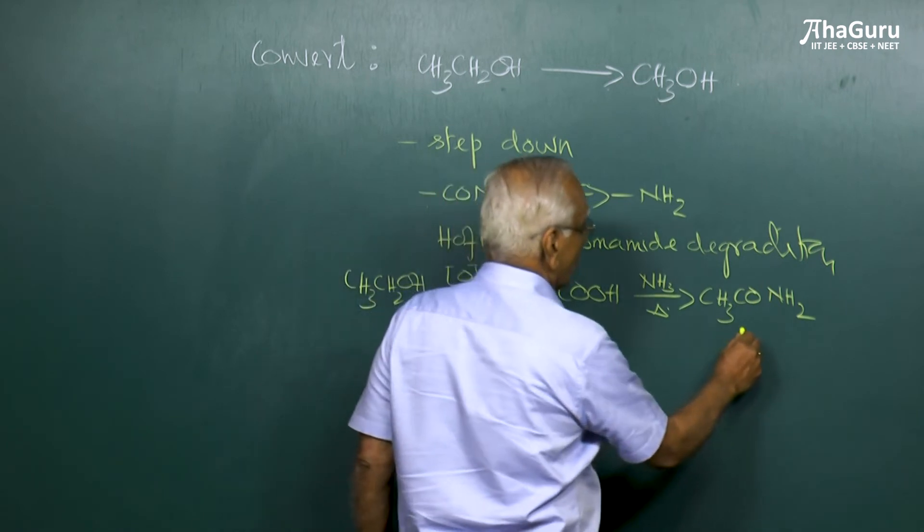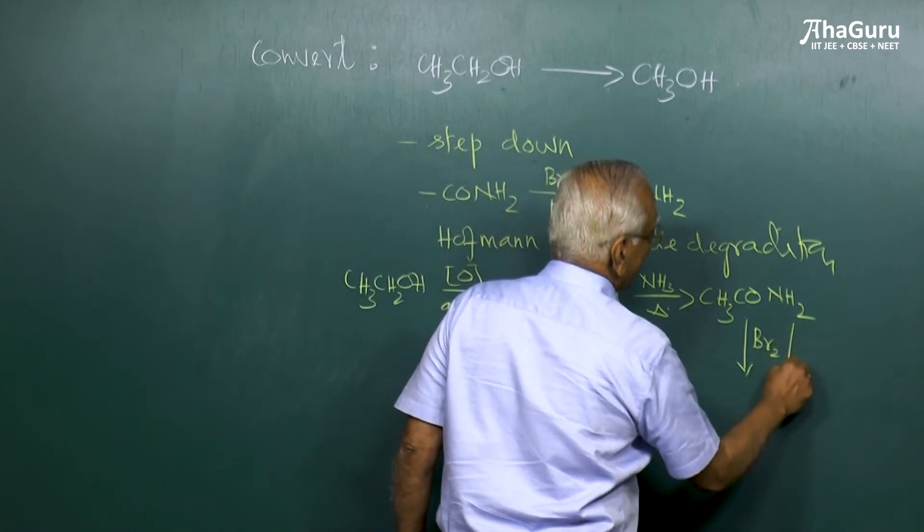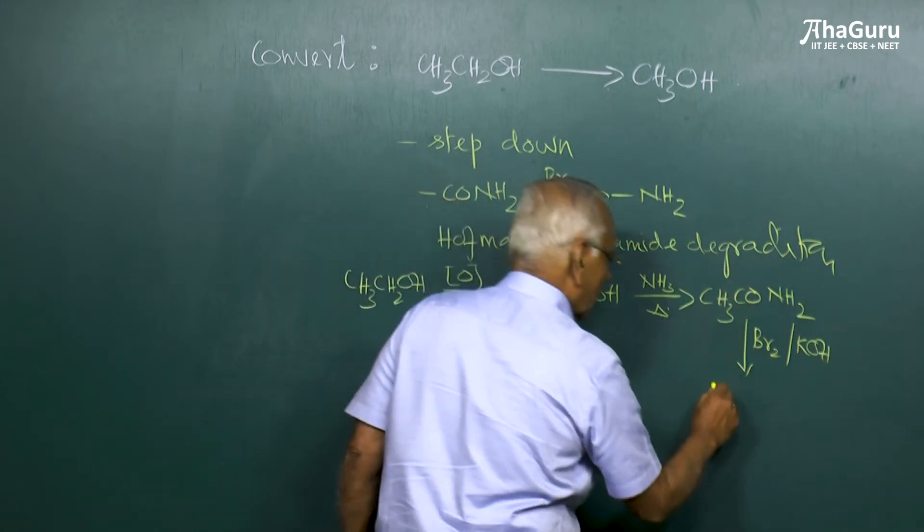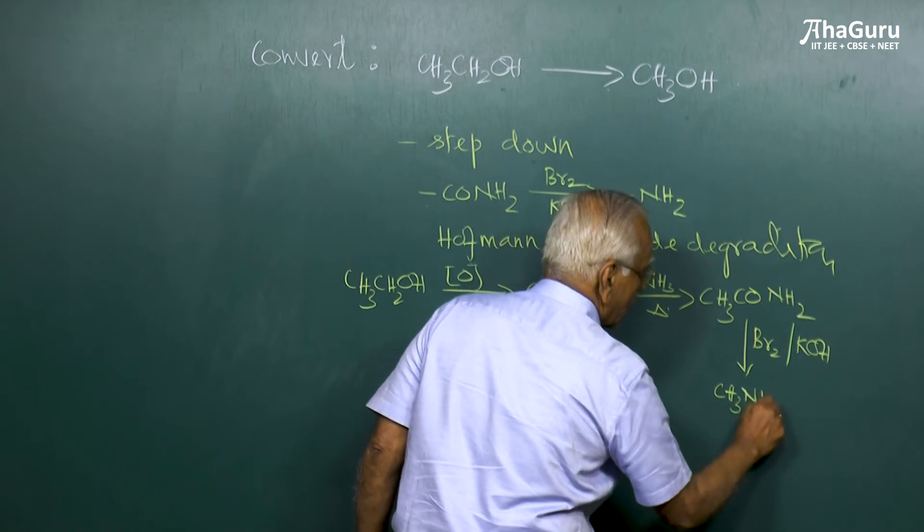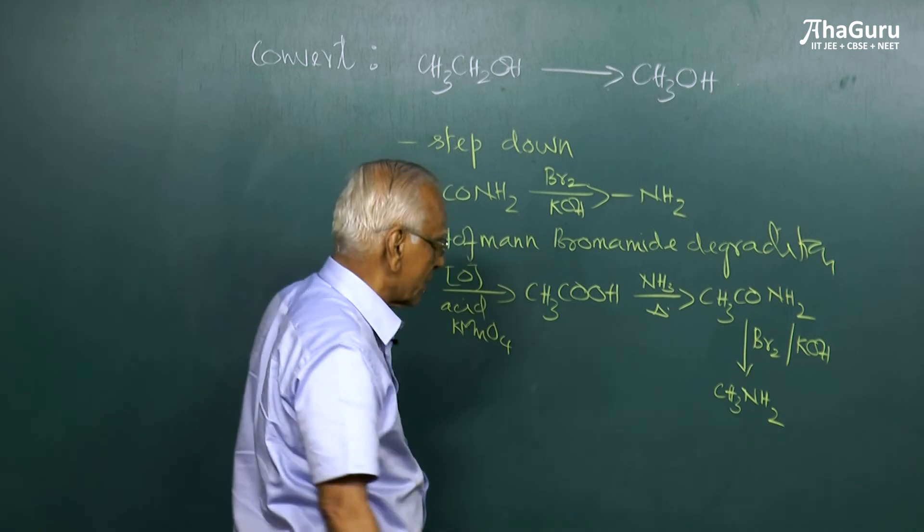Now this is the time for us to remove one carbon atom. We add bromine and KOH, any alkali for that matter. So one carbon atom goes away, and we make use of Hoffman bromamide degradation here, rearrangement here.